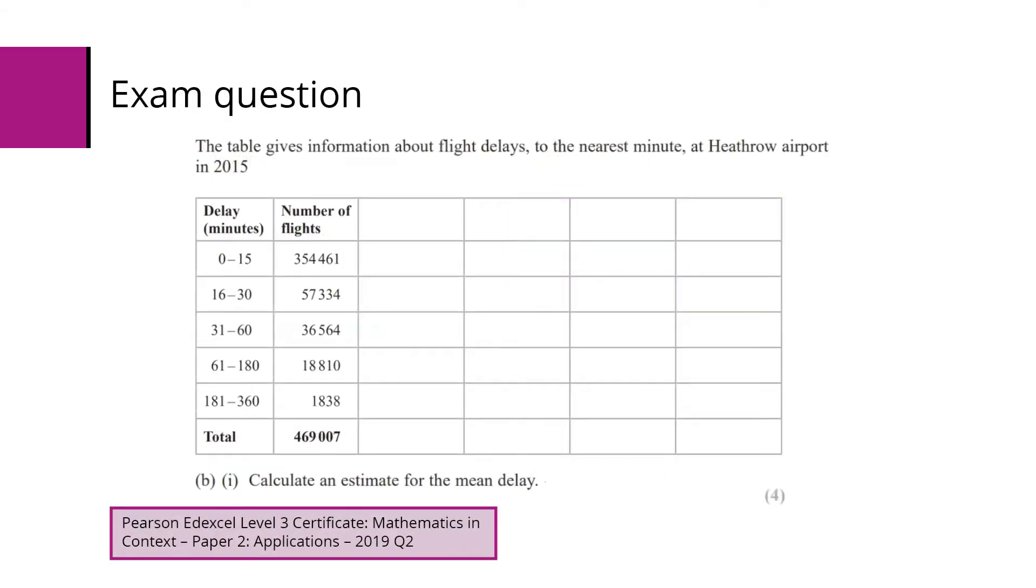Let's take a look at an exam question. This one is from 2019, it was on Paper 2, Question 2. It's data about flight delays at Heathrow Airport in 2015, and this was pre-release information. Students saw this and had been working on it for some time, so this information wasn't exactly new to them.